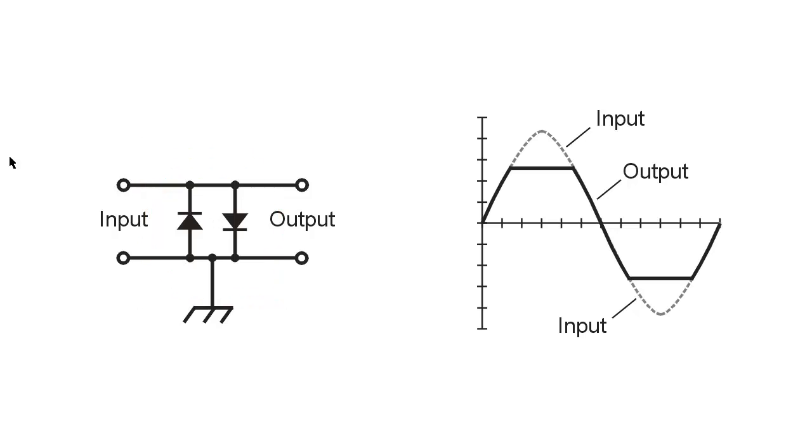What that means is that a diode like this will not conduct until the voltage reaches that forward break over voltage of about five or six tenths of a volt. And then after that, if you try to apply more than that voltage across it, it will act like a short circuit.